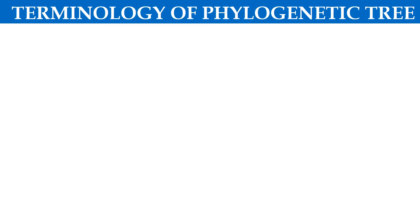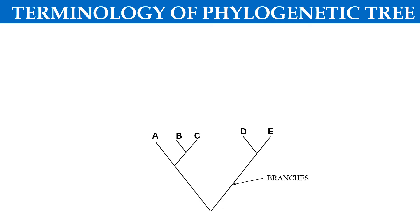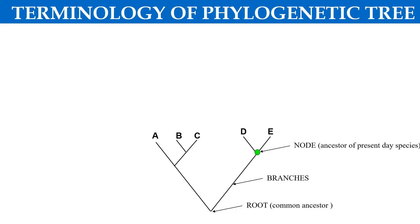Now the terminology of this phylogenetic tree — what are the terms and how you draw the phylogenetic tree. In the phylogenetic tree, like this is the example of phylogenetic tree. So in this, these straight lines are called as branches of the tree. Where these branches meet, like here at the base, it is known as the root.